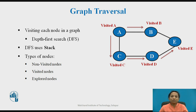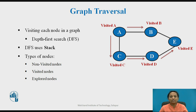When we apply these algorithms on a graph, we can see non-visited, visited, and explored nodes. Non-visited nodes are nodes not yet visited. Visited nodes are nodes which have been visited. An explored node is one that was visited and all nodes adjacent or connected to it are also visited — those come under explored nodes.